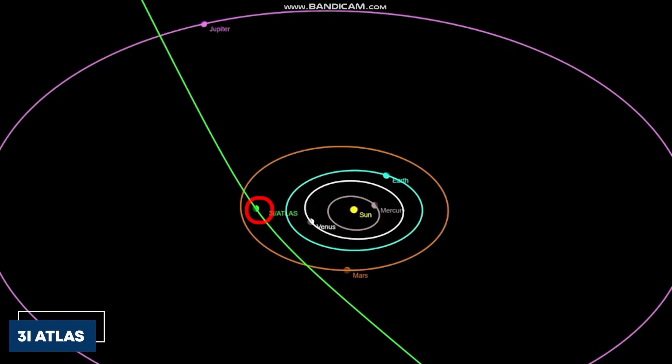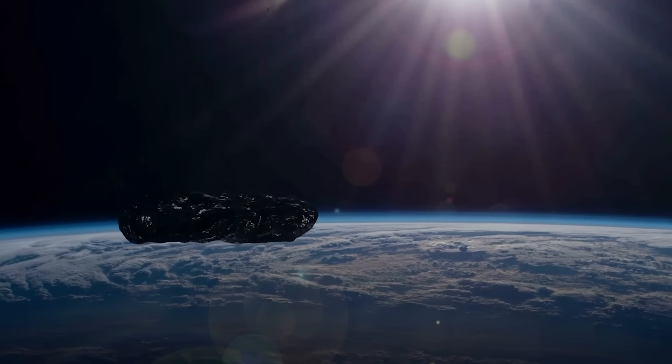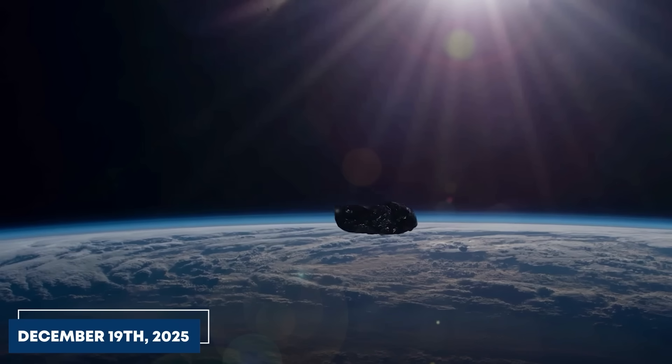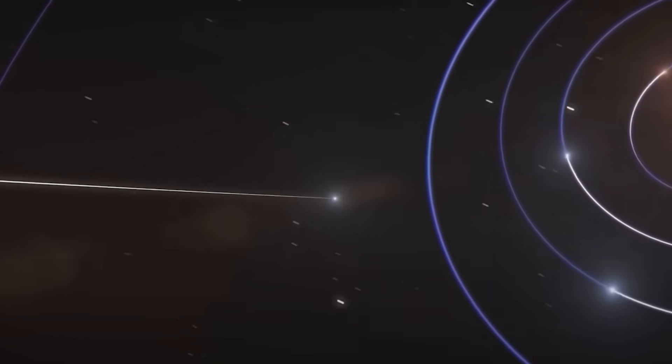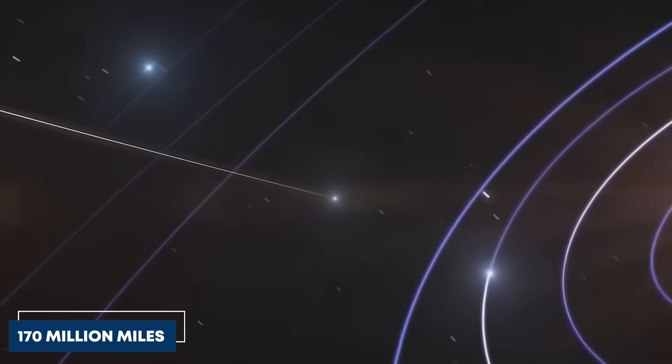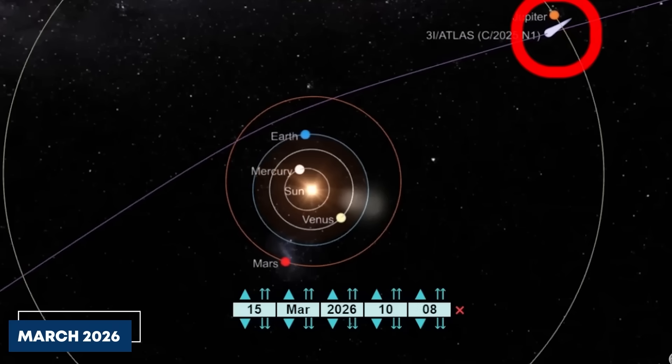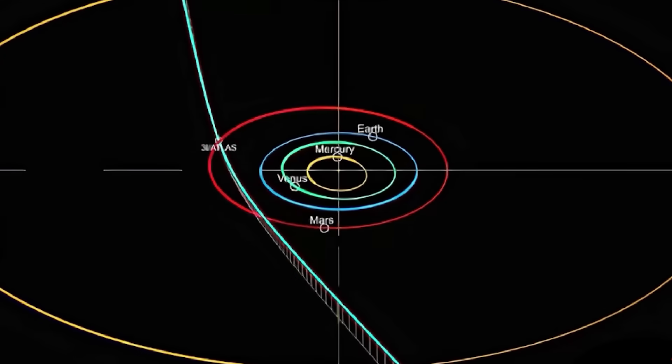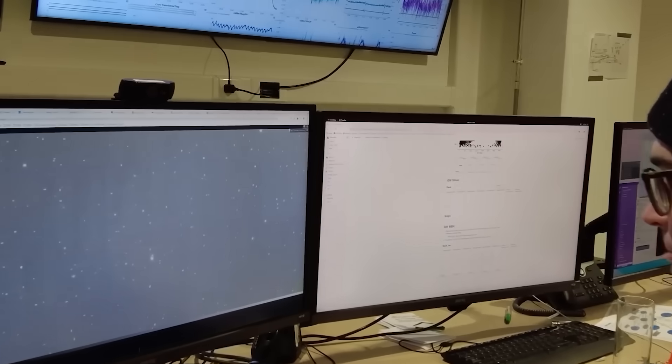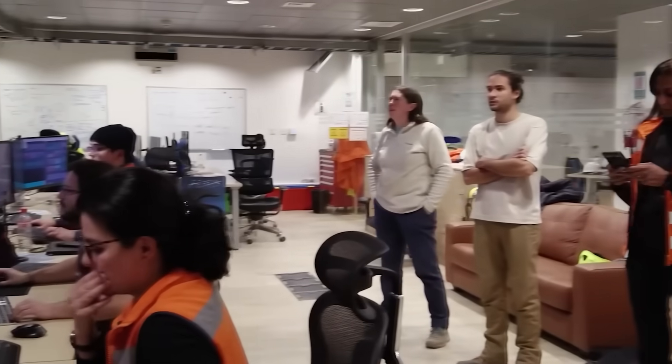As 3i Atlas continues its journey through our solar system, it will pass closest to Earth on December 19, 2025, at a comfortable distance of 170 million miles. After that, it will swing past Jupiter in March 2026, before curving back into interstellar space, leaving behind terabytes of data and countless questions.